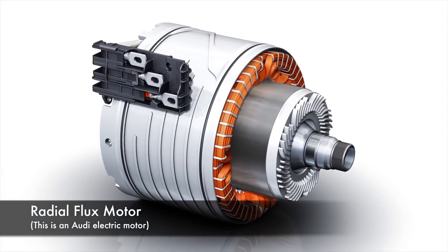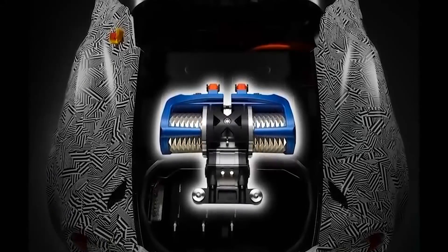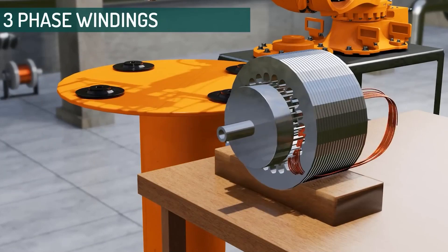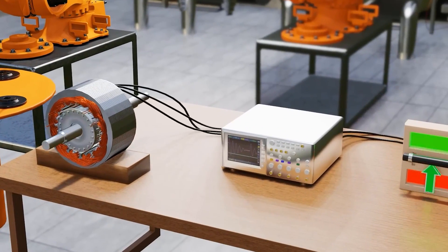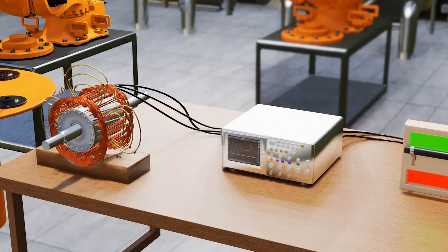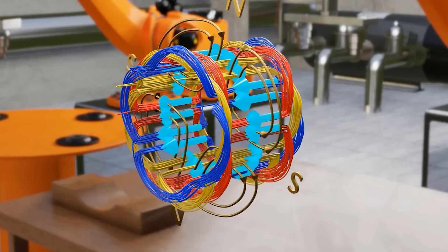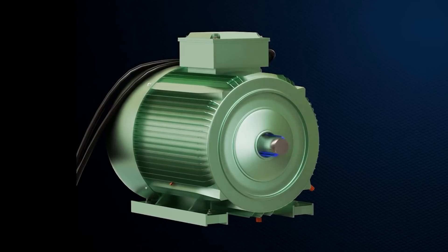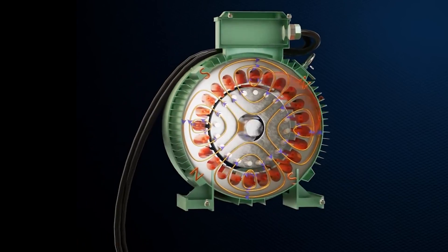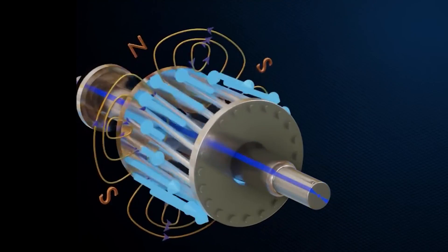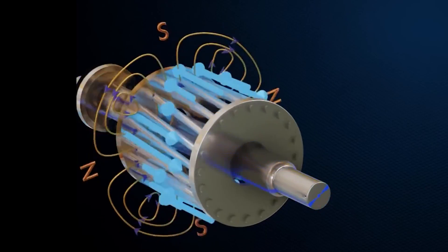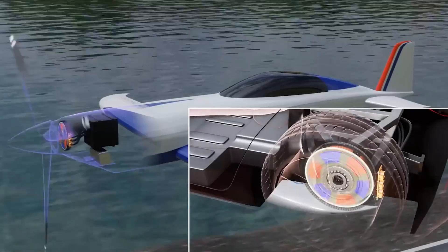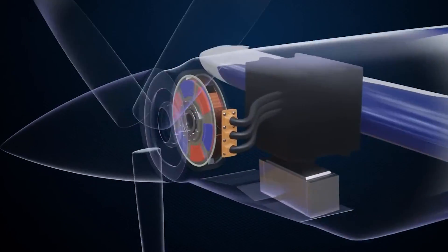Let's start with the stator. The stator is the immovable force in this dynamic dance. It houses coils of wire, and when the electricity flows through these coils, the magic happens. Sorry, magnetism happens. Well, same thing. Now onto the rotor. This guy spins like there's no tomorrow. It's armed with magnets, and as the magnetic field from the stator sweeps over, it's forced to follow suit. This interaction is what gives us that satisfying hum of a motor in action.